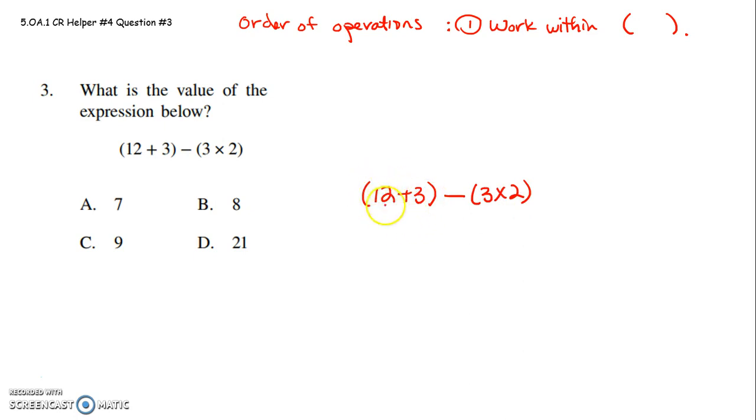So inside each set of parentheses, you have to get a single value. So what's 12 plus 3? 12 plus 3 is 15. Once I have that single value, I can keep my parentheses or I can drop them. It's up to you. Then you just have to make sure whatever operation is attached, you write it in. Oh, it's a subtraction.